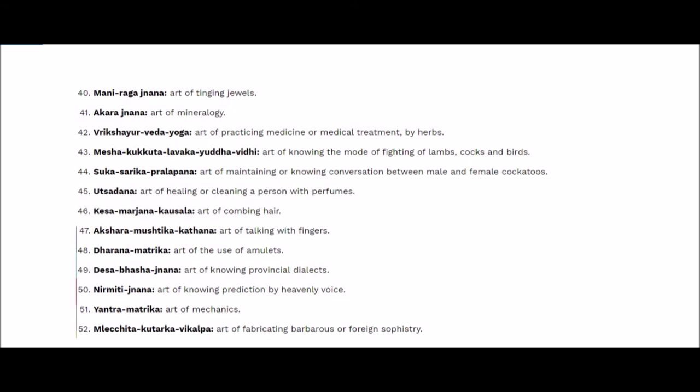In ancient India, animal fights were used during festival times — nowadays we see horse-riding bets. Then Hasta Vidya, covering elephant rides, camel rides, bulls, and cows used in society. Then Utsadana, the art of healing or cleaning a person with perfumes — similar to modern spas. Spas are not something new; they knew this particular art. Then Kesha Marjana Kaushala, the art of combing hair. Entire scriptures are available on hairstyles. Then Akshara Mushtika Kathana, the art of talking with fingers — gestures, body talk, mudras.